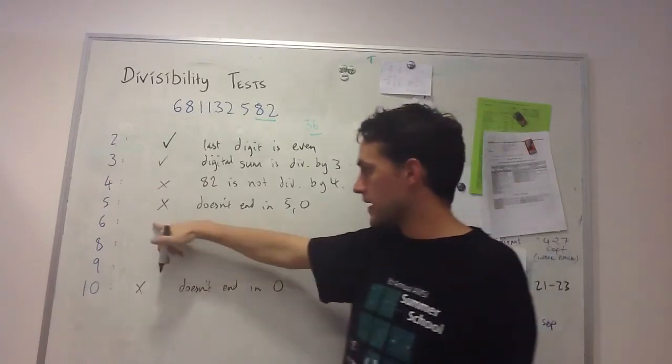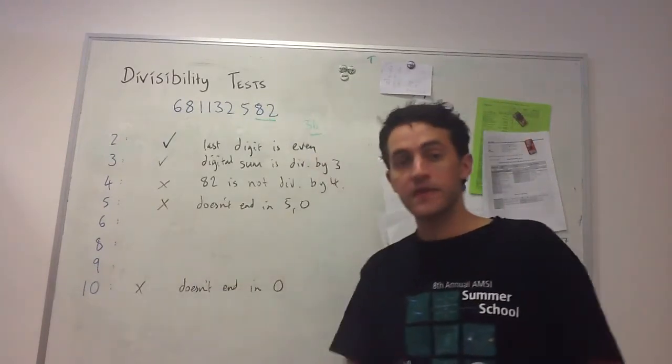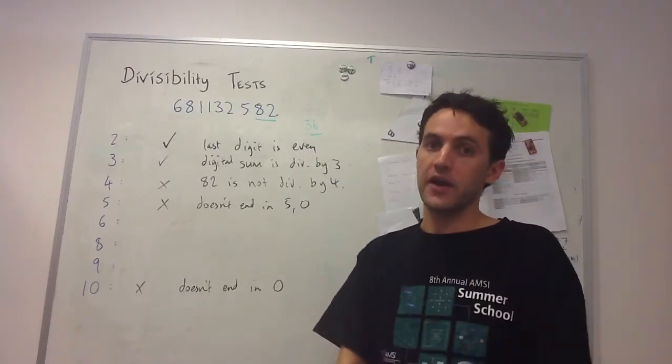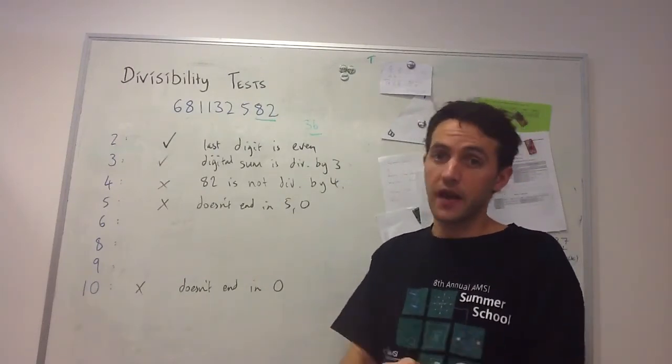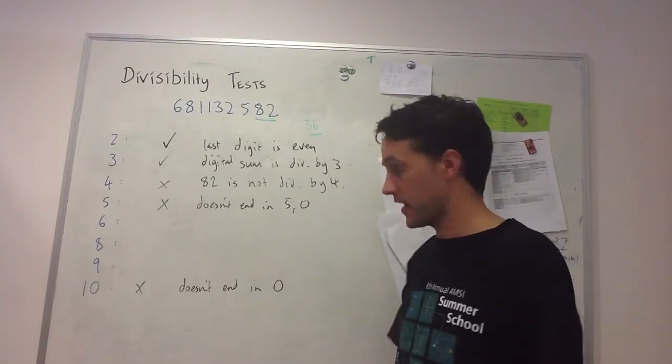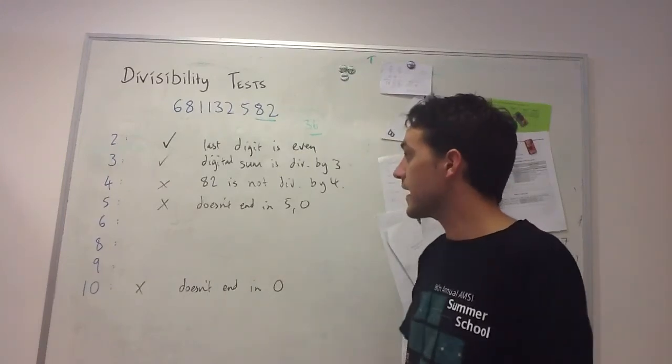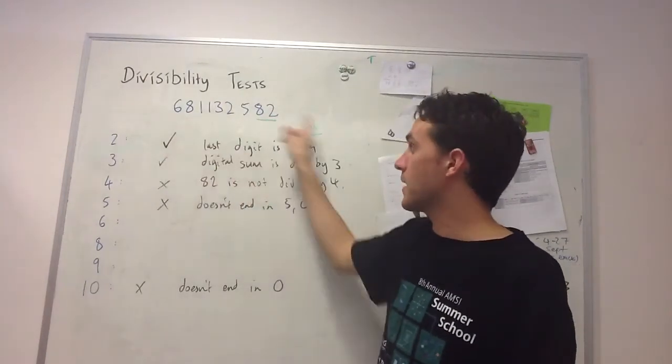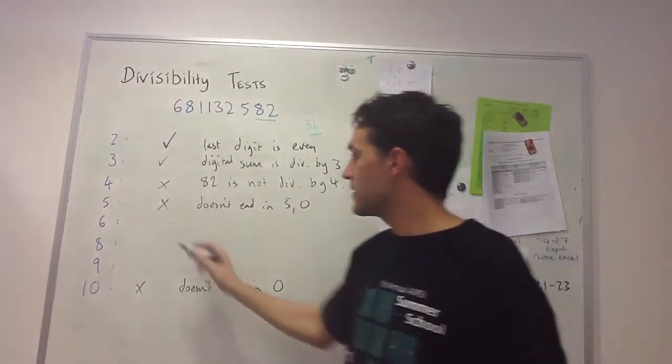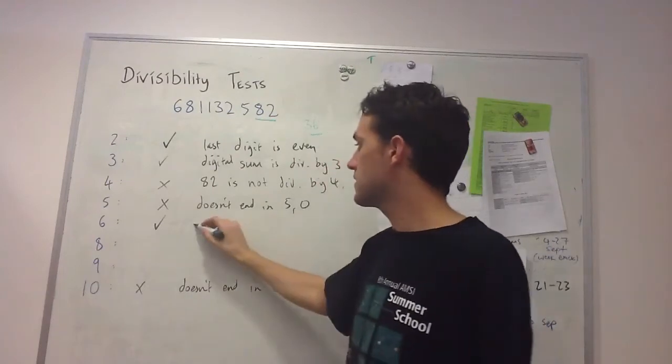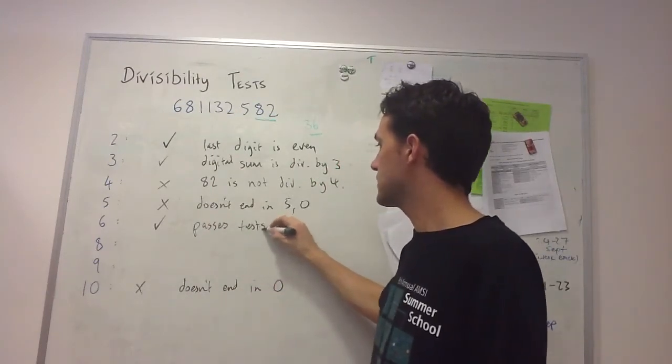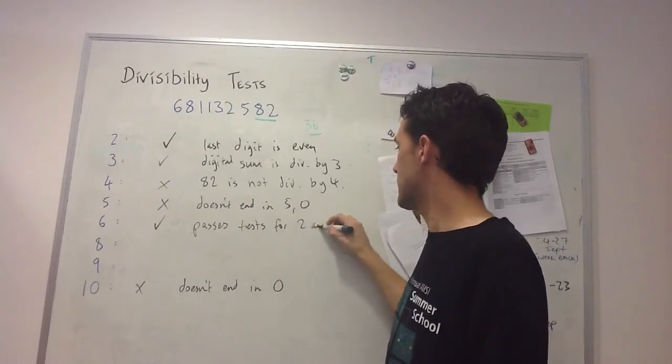For 6, remember that all multiples of 6 are divisible by both 2 and 3 because the multiples of 6 are precisely the even multiples of 3. This number passed the tests for 2 and 3, so it's divisible by 6.